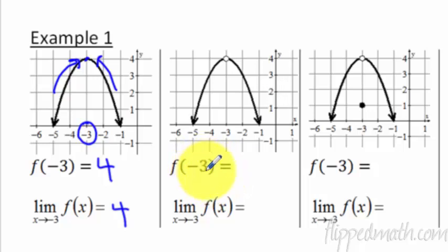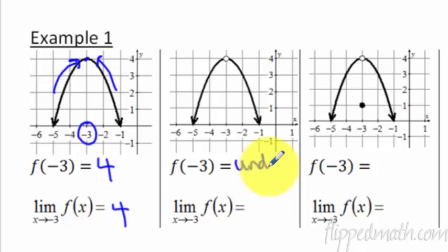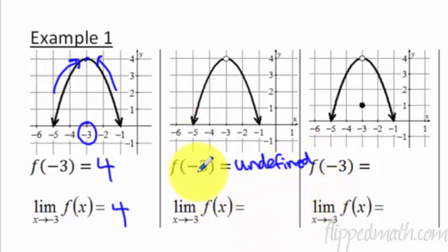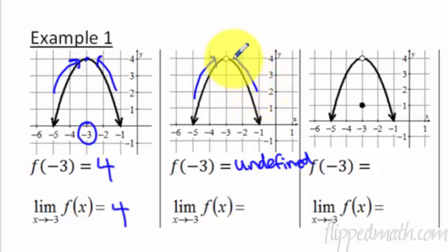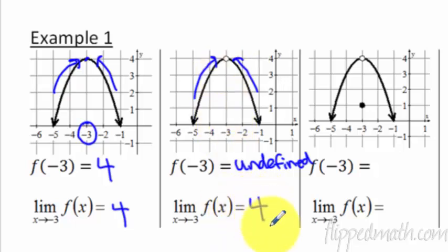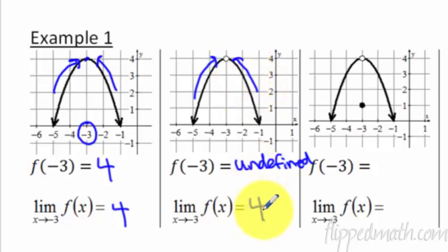Now let's do f of negative 3 where there's a hole at that point. Since there's a hole, the function is undefined — does not exist. There is no y value there. But the limit is just where it is headed: as we get closer and closer to this x value of negative 3, the y value is 4. It doesn't matter that there's nothing there. We're not talking about what's on the spot; we're talking about where it is headed to that spot, and it's headed to a y value of 4.